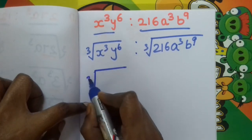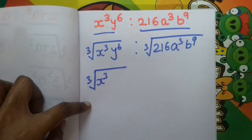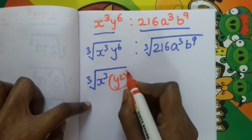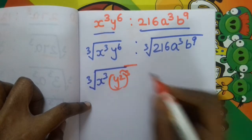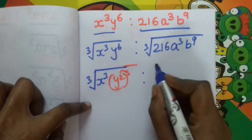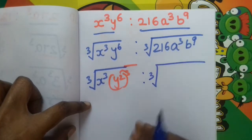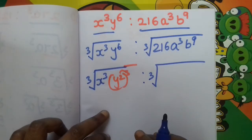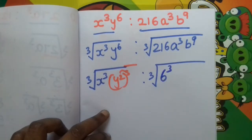So the cube root applies. We have x cubed, and y to the power 6 can be written as y squared to the power 3, because power to the power: 2 into 3 equals 6. And 216 is 6 cubed, because 6 cubed equals 216. So a cubed is there. And b to the power 9 is b cubed to the power 3.